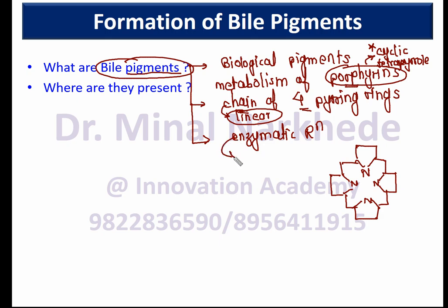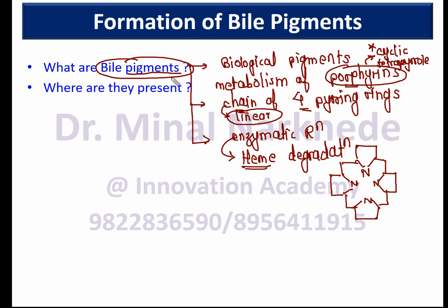These enzymatic reactions work during heme degradation. Heme is a component of hemoglobin. So basically, bile pigments are produced during the enzymatic degradation of heme, a component of hemoglobin.